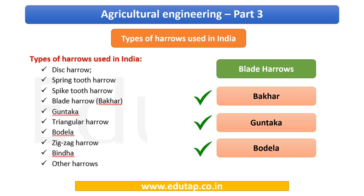The types of harrows used in India include disc harrow, spring tooth, pipe tooth, blade harrow, triangular, bodela, zigzag, and binda. All these are explained in the content sheets. The important thing is to know the names and that they are used for secondary tillage — to break the clods formed after plowing.